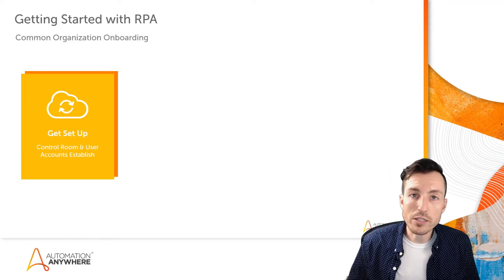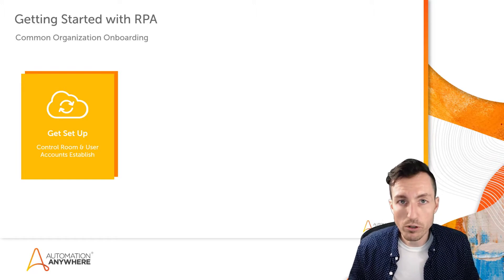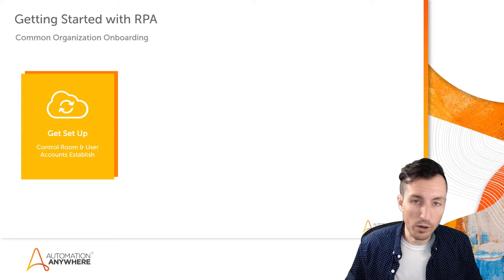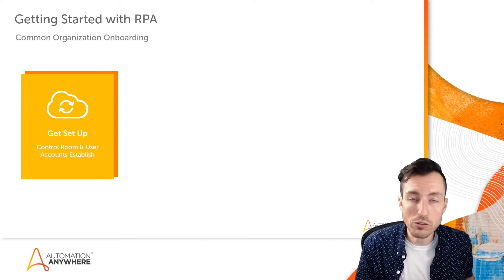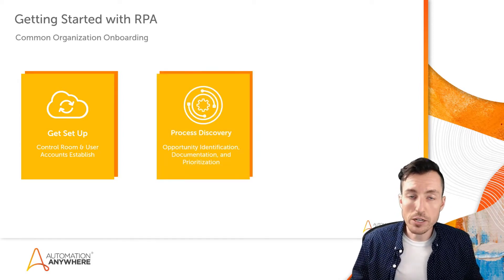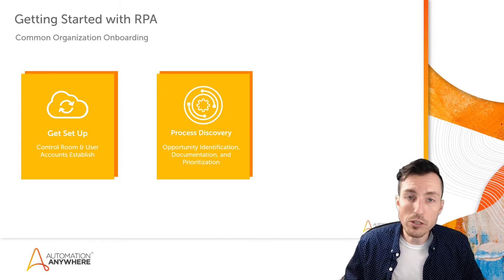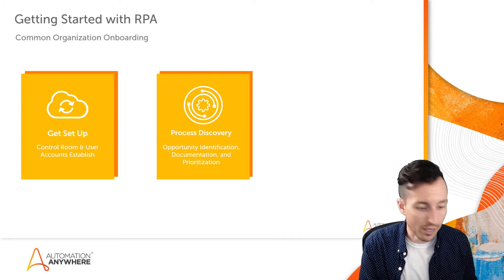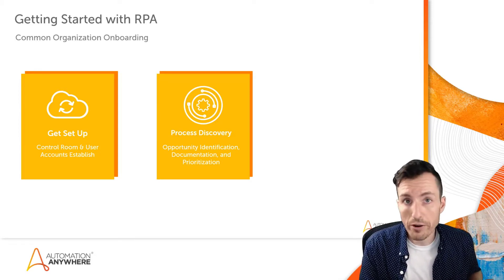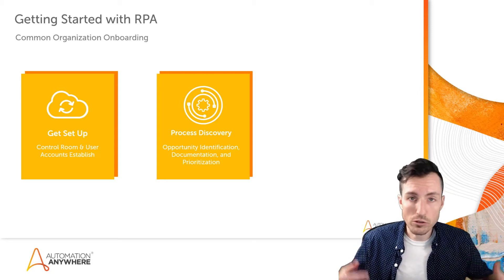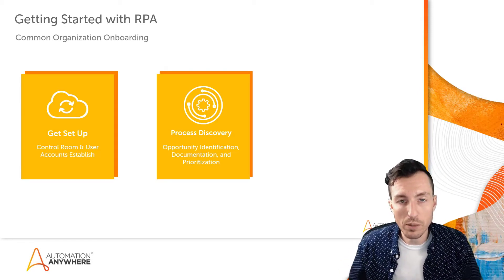Let's talk about what happens when an organization onboards with Automation 360. The first thing that happens is getting set up — you get your control room, you get all your users established, you create your roles, things like that. From there, an organization will dive into process discovery, where we go through opportunity identification, documentation, and prioritizing those different opportunities. You may or may not have opportunities you've already identified — like the whole reason you got RPA in the first place.